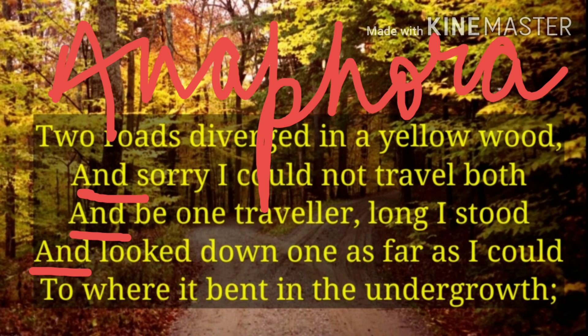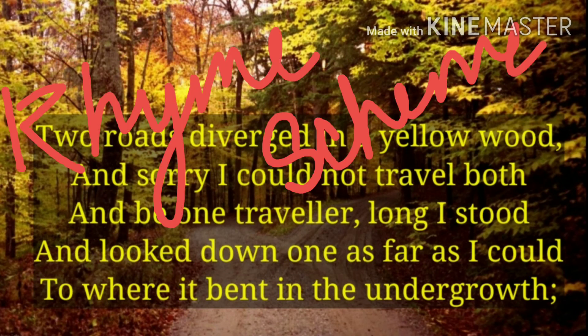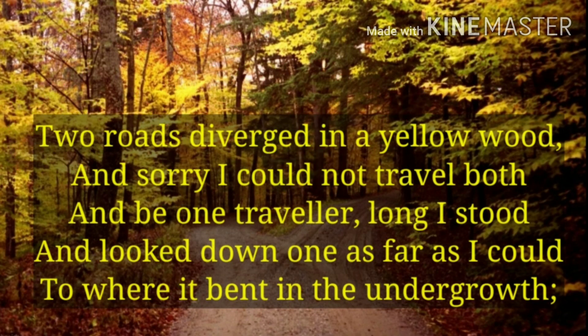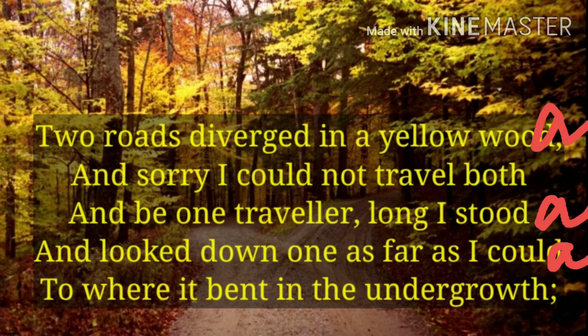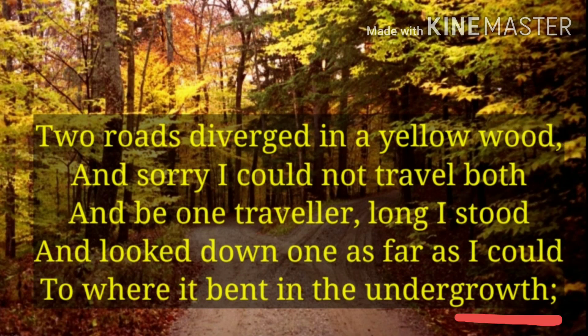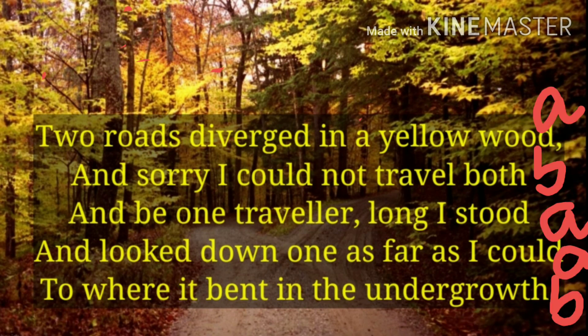Now, one important thing is left — the rhyme scheme. You can see the end word of each line and tell easily about the rhyme scheme. The first line ends with the word 'would,' the third line with 'stood,' and the fourth line with 'could' — so a, a, a. Then the second line ends with 'both' and the last line with 'growth' — so b, b. The rhyme scheme is a, b, a, a, b.